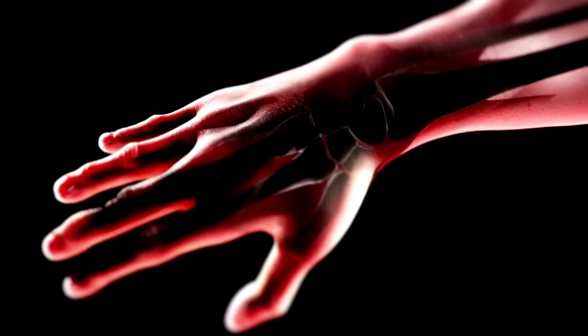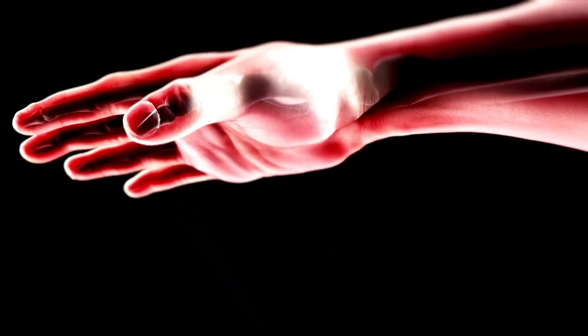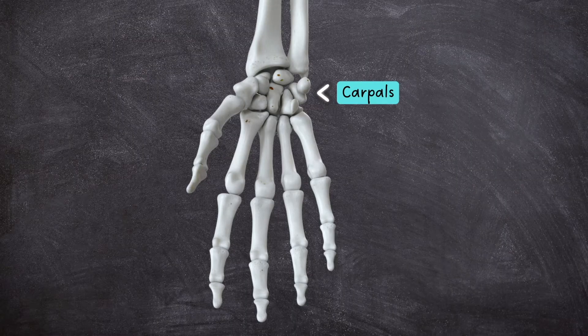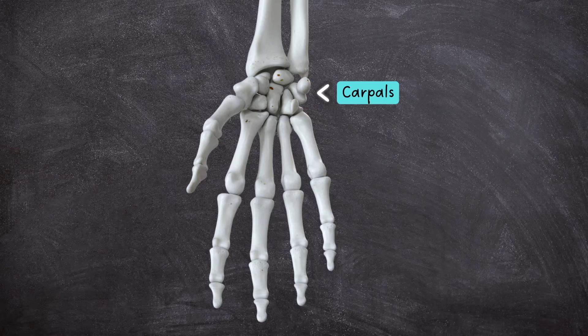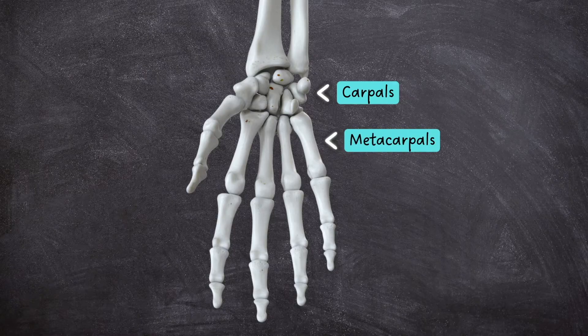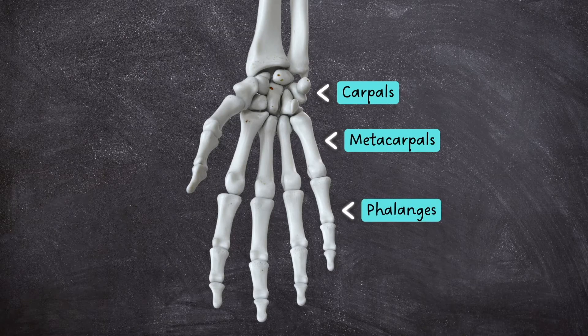The human hand has 27 bones. The carpals, of which there are 8, are short bones that provide both stability and a small range of movement in multiple directions. The palm of the hand is occupied by 5 metacarpal bones, which connect the carpals to the 14 phalanges, or finger bones.